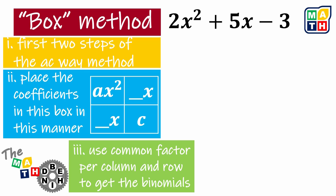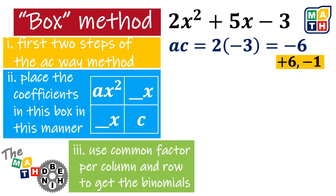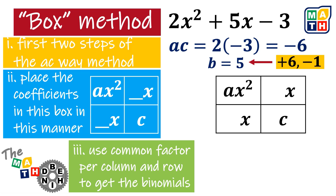To start with, let's duplicate the first two steps of the AC way method. A times C is negative 6, and let's look for the factors of it which could result in the same B coefficient, which is 5. We have positive 6 and negative 1. Step II is to have this table where we are going to change A to the given, which is 2, and C, which is negative 3. The two coefficients earlier will be placed to complete this table.